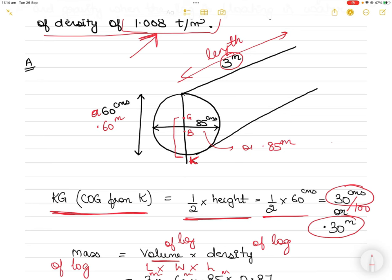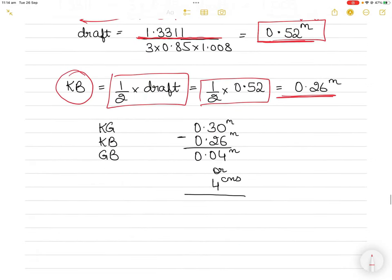Depending on the draft we find the center of the draft which gives us the center of the buoyancy. KB equals 0.26 and KG equals 0.30, so the distance between G and B is KG minus KB: 0.30 minus 0.26 equals 0.04 meters or 4 centimeters. Depends on what unit you want to write the answer in.